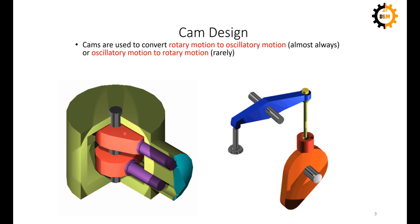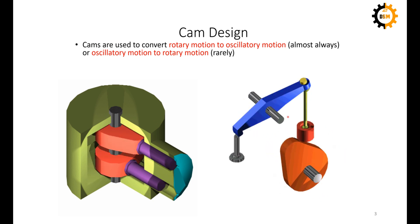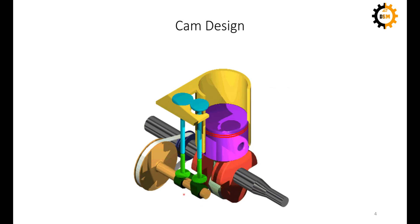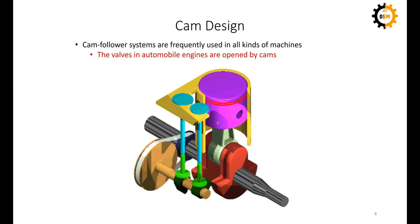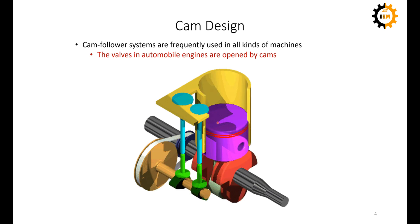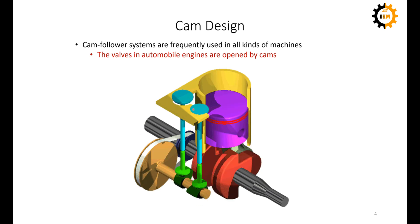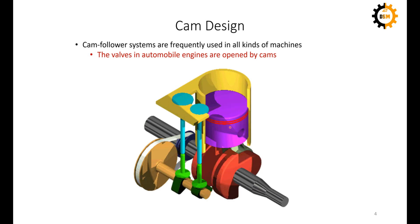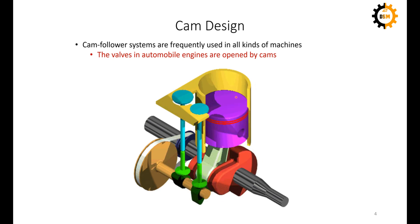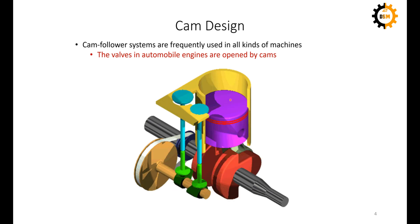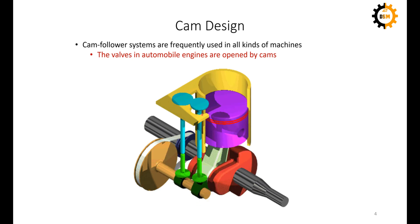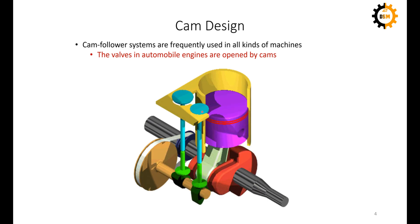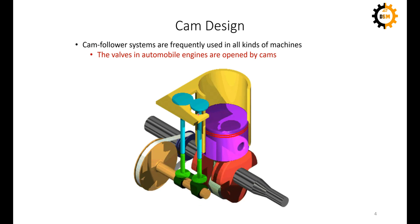The cam follower mechanism is a mechanism which is used to convert rotary motion to oscillatory motion most of the times. One example application is the automobile engine. The engine has valves in the cylinder — the purple thing is the piston and the yellow thing is the casing of the cylinder block. Valves are used to introduce oxygen, fuel, and air, and also for extracting burned gases out.